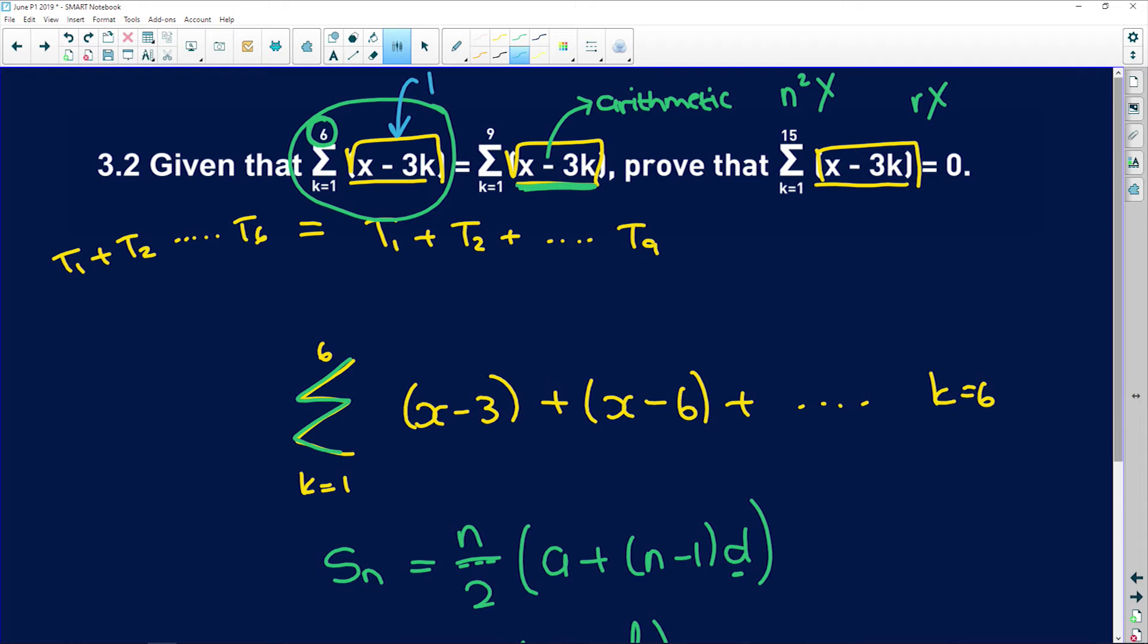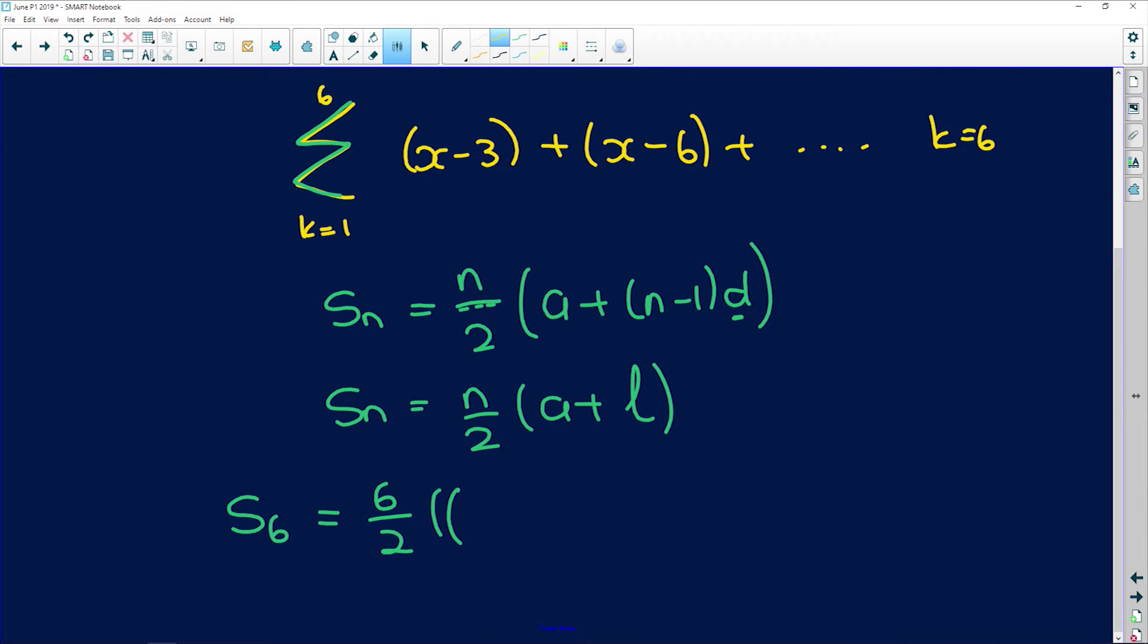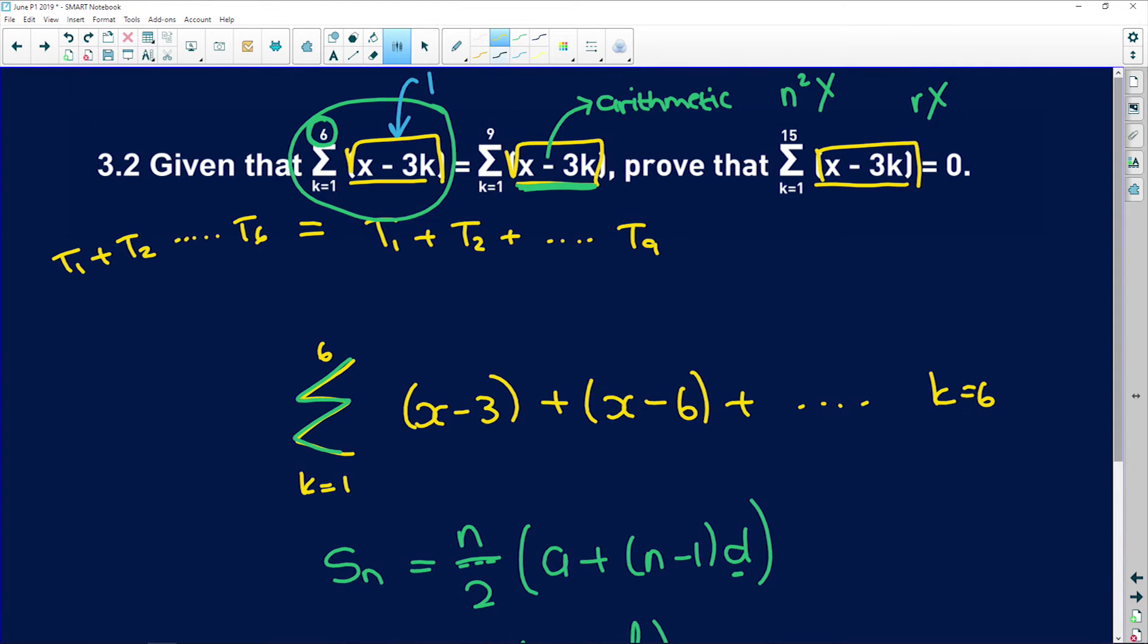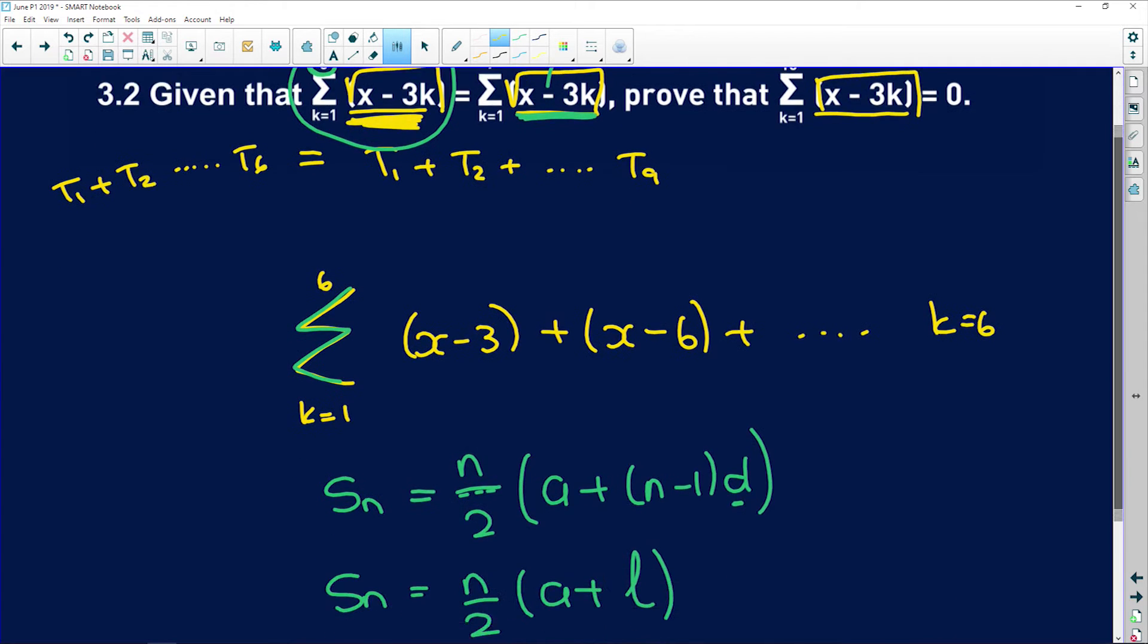Plus the last term. Remember we're going up to 6, so if we substitute 6 into this expression, we're going to get x minus 3 times 6, which is x minus 18.